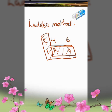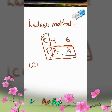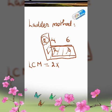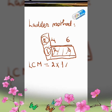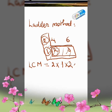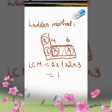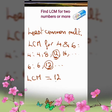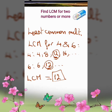The LCM will be all the numbers inside the L multiplied by each other, so it's 2 times 1 times 2 times 3, which is 12. I got the same answer as the normal method.